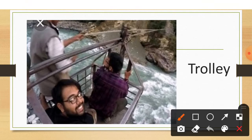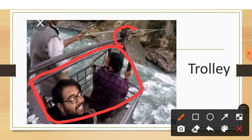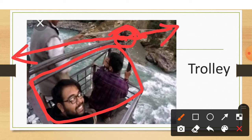A trolley is a wooden or iron box, and a pulley is attached to this box. One rope is attached to this pulley, and both ends of the rope are tied tightly to a stone, tree, or mountain rock.